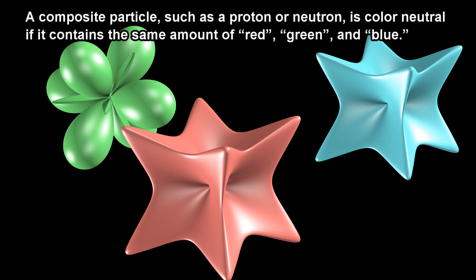A composite particle, such as a proton or neutron, is color neutral if it contains the same amount of red, green, and blue.